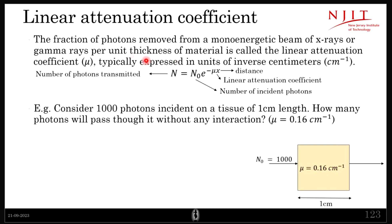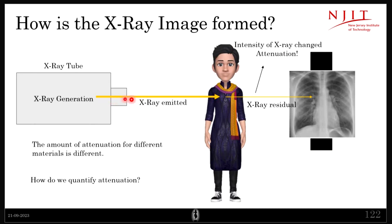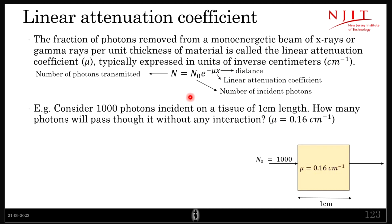The linear attenuation coefficient is defined as the fraction of photons removed from a mono-energetic beam — a beam with only one energy, for example only 100 kilo-electron volt photons. The fraction of X-rays or gamma rays removed per unit thickness of the material is called the linear attenuation coefficient.